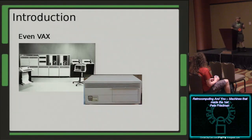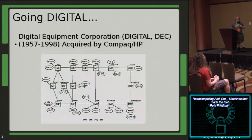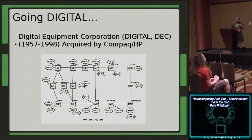Even the VAX - the MicroVax, VaxStation 2000 - actually came in a lunchbox form factor. Machines that you sort of associate with big iron, you can put on your desk. Here's that ARPANET diagram I was talking about. It's sort of readable. A lot of those machines - you see PDP-1, PDP-11, PDP-10, and VAX. A lot of people cut their teeth on VAX.